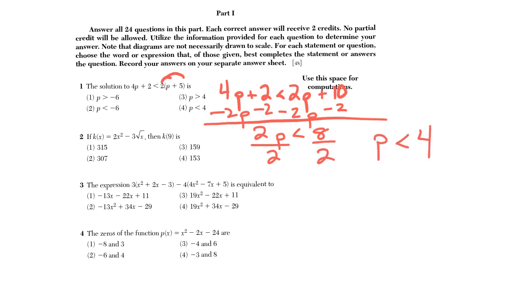My last step here, I'm going to divide by 2 and I ultimately get p is less than 4, choice 4. If you did bring the p's over to the right, we get negative 2p, so you would have a negative the other way. Usually with inequalities we tend to like the variable being on the left-hand side. With inequalities, we usually like the variable on the left.